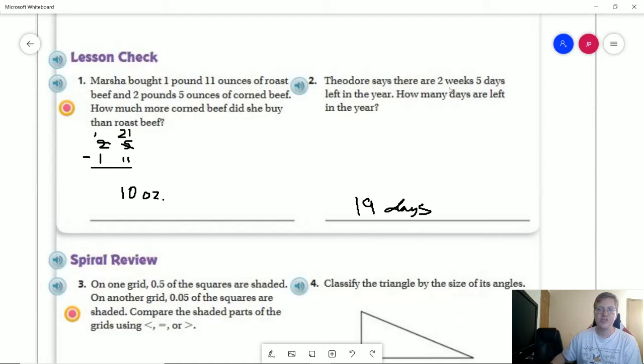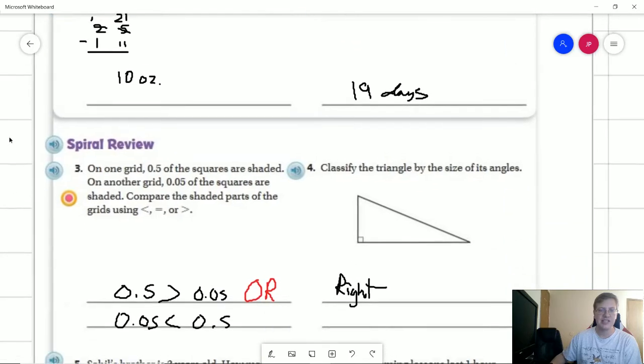For this one, we have two weeks times seven to get 14 days. 14 plus five gives us 19.